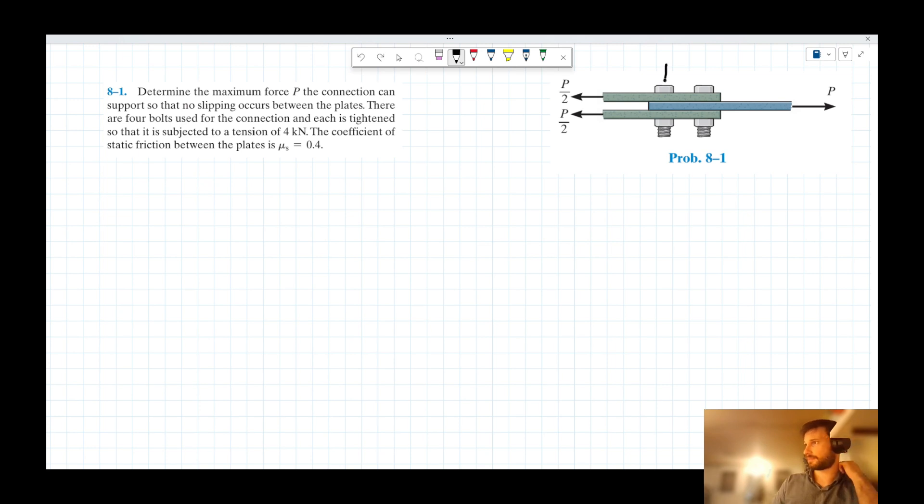if each bolt is tightened and is giving four kilonewton tension, we can say we've got two, since we understand that there's four bolts here and this is only showing us the front two. So there's kind of two lots of four kilonewton forces acting here and here, I suppose, two four kilonewton forces.